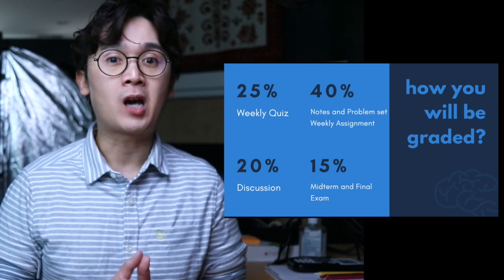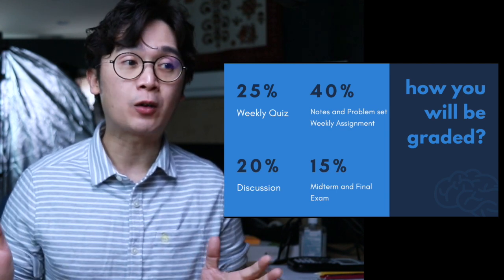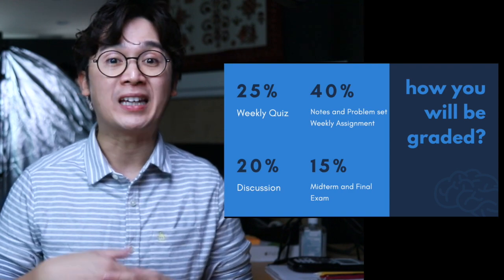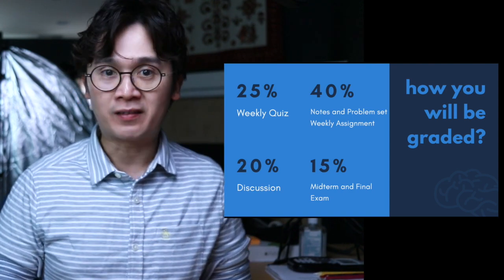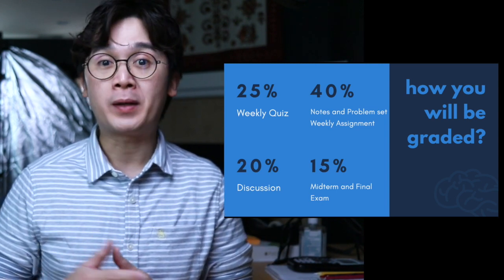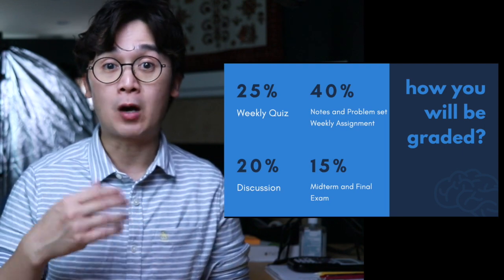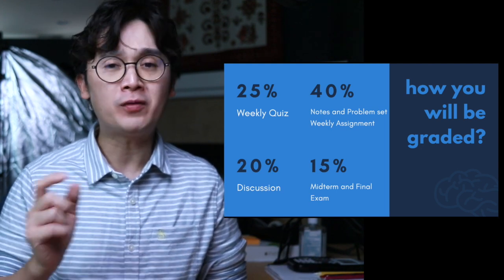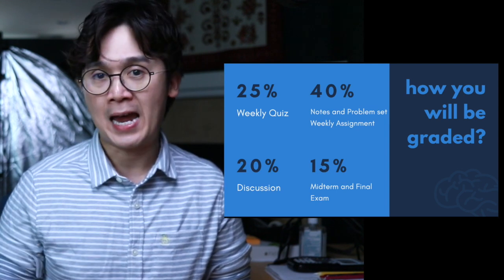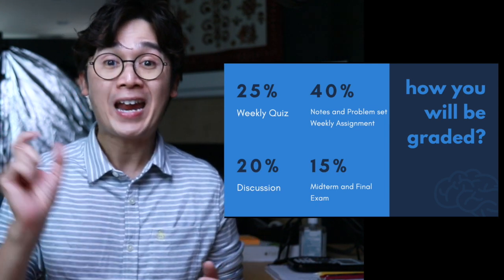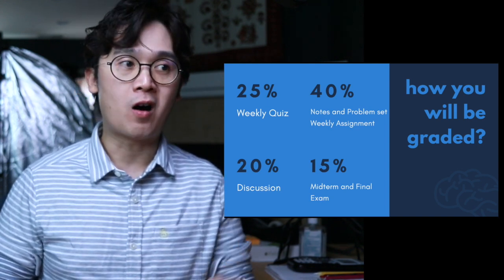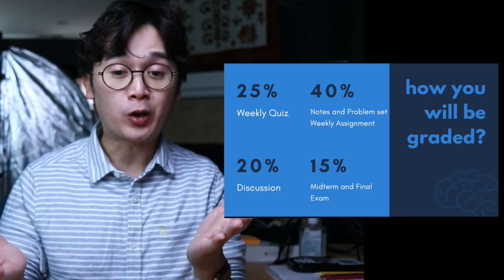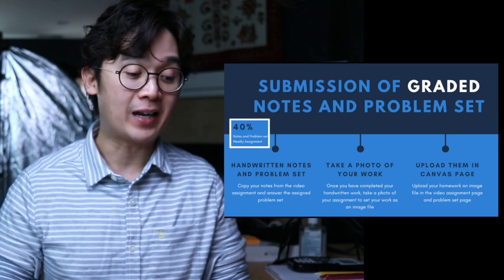25% of your final grade will be coming from your weekly quiz. Before you answer your weekly quiz, make sure that you are going to take notes from the video assignment and answer the problem set, which is 40% of your final grade. 20% of your grade will be coming from your discussion, and for your 15% that will be your midterm and your final exam — and that is 100%. So if you want to earn your A, know what concepts you need to master, and try to avoid your D and your F in our class.